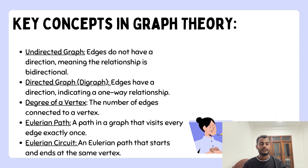To understand the Chinese postman problem, let's go over some key graph theory concepts. In an undirected graph, edges do not have a direction — the relationship is bi-directional. In a directed graph, edges have a direction indicating a one-way relationship. The degree of a vertex is the number of edges connected to it. An Eulerian path visits every edge exactly once, and an Eulerian circuit is an Eulerian path that starts and ends at the same vertex.